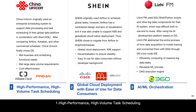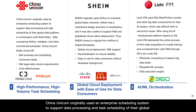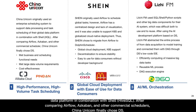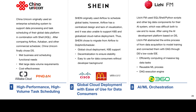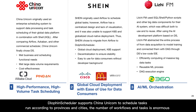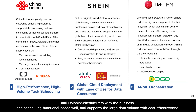Case 1: High-performance, high-volume task scheduling. China Unicom originally used an enterprise scheduling system to support data processing and task scheduling at their global data platform, in combination with Shell and Hive. After comparing Airflow, Azkaban, and other commercial schedulers, China Unicom finally chose Dolphin Scheduler. It supports scheduling tasks by provinces and cities, handles an enormous number of workflows and tasks, fits business and scheduling needs, and supports large data volumes with cost effectiveness.